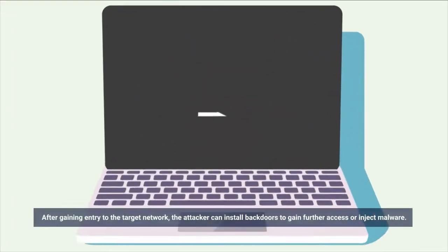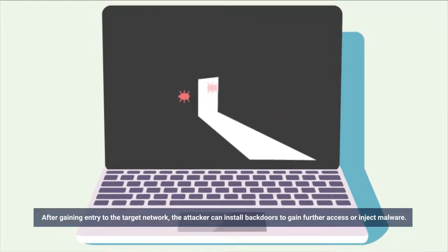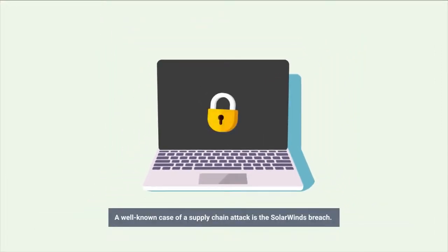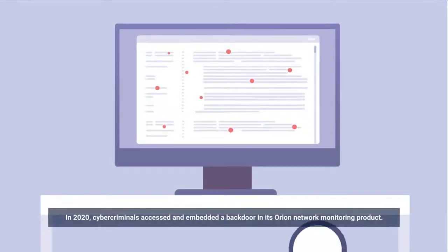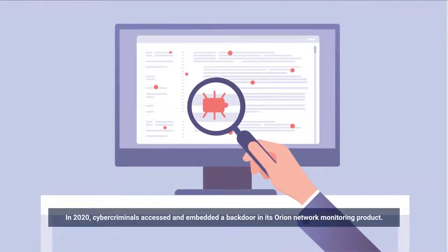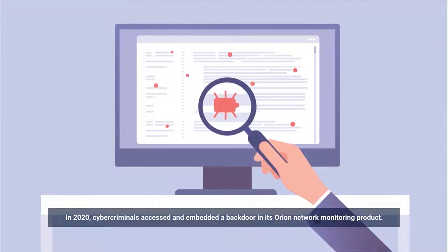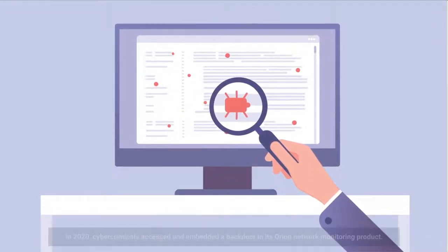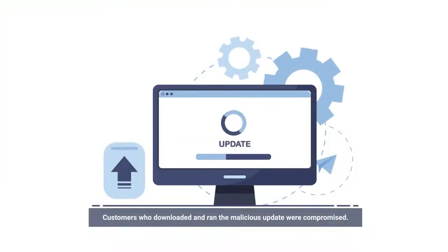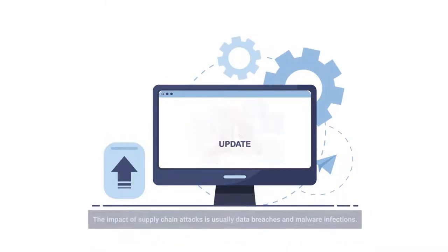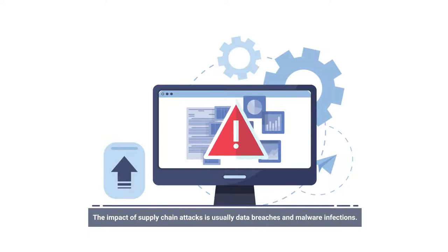After gaining entry to the target network, the attacker can install backdoors to gain further access or inject malware. A well-known case of a supply chain attack is the SolarWinds breach. In 2020, cybercriminals accessed and embedded a backdoor in its Orion network monitoring product. Customers who downloaded and ran the malicious update were compromised. The impact of supply chain attacks is usually data breaches and malware infections.